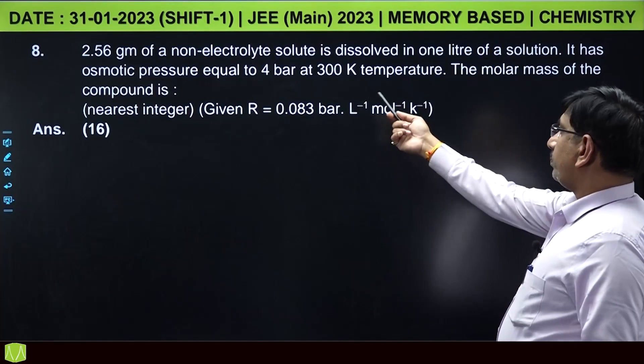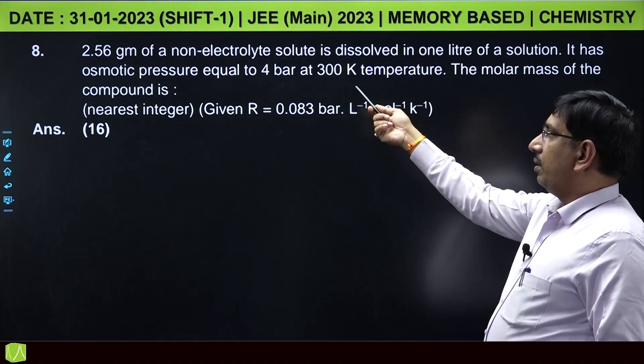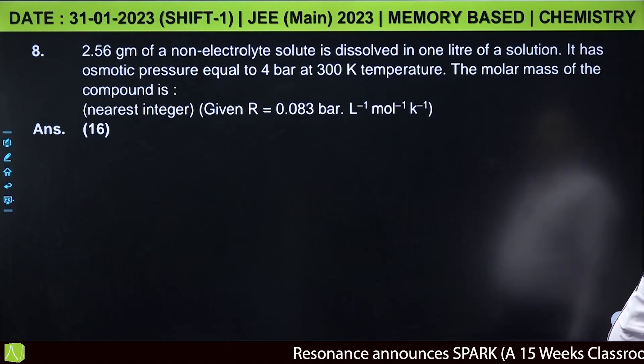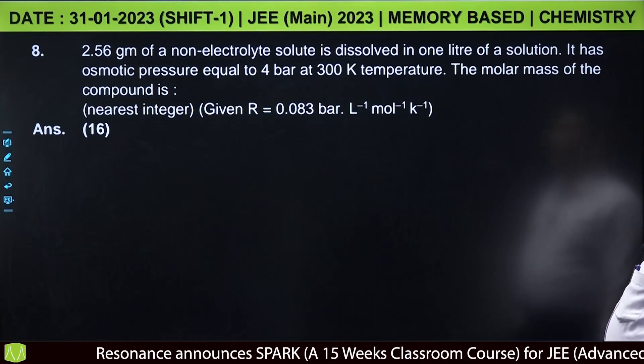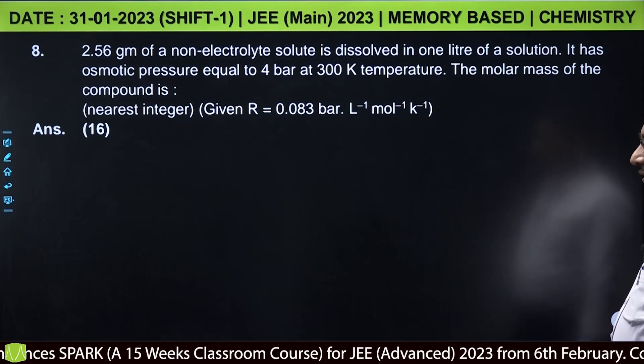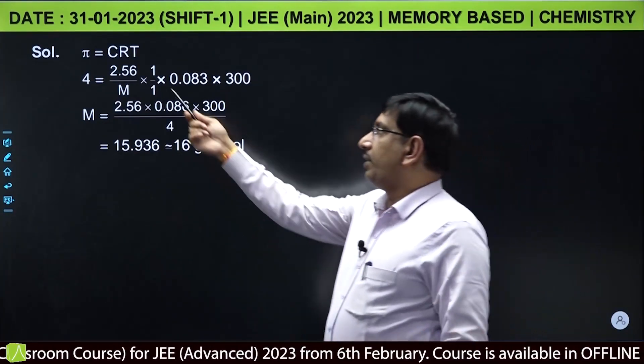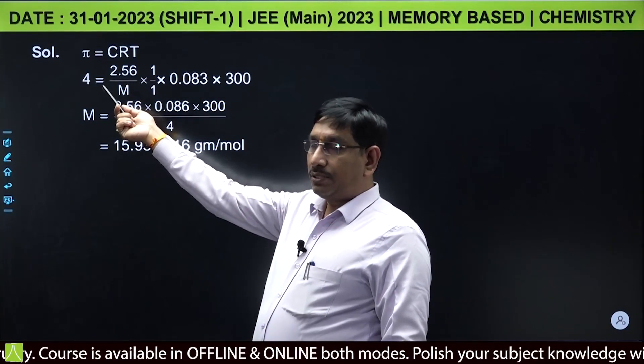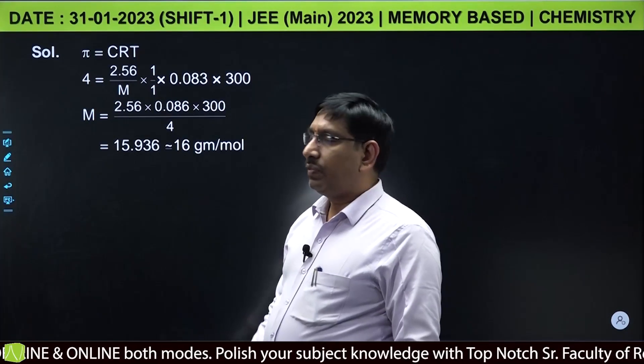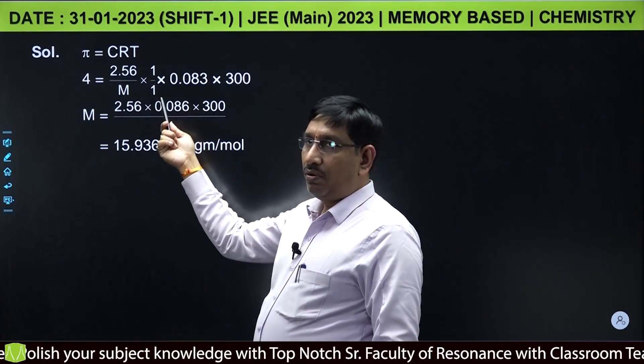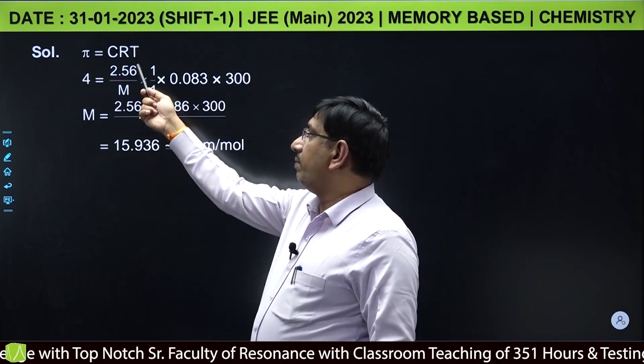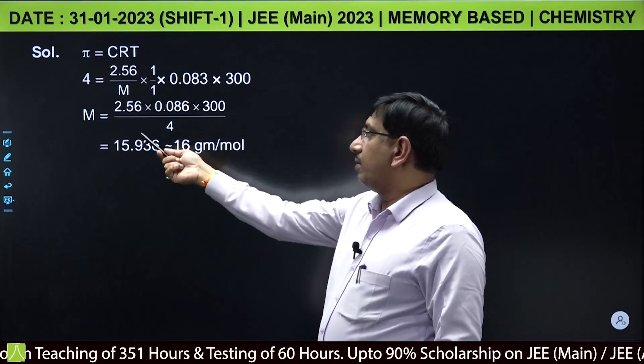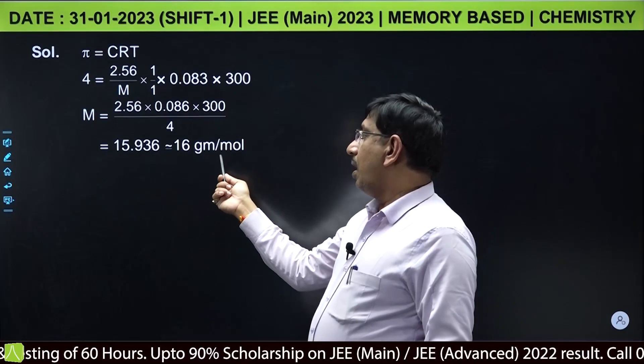This is a simple osmotic pressure question. 2.56 grams of non-electrolyte solute is dissolved in 1 liter of solution. It has osmotic pressure equal to 4 bar at 300 Kelvin temperature. The molar mass of the compound is: osmotic pressure pi equal to CRT. It is non-electrolyte, so Vant Hoff factor is 1. 4 bar is the osmotic pressure given, concentration is weight by molecular weight into 1 by volume in liters, 1 liter volume is given, temperature is 300. On calculating you are getting 15.936, and on rounding off you will get 16.